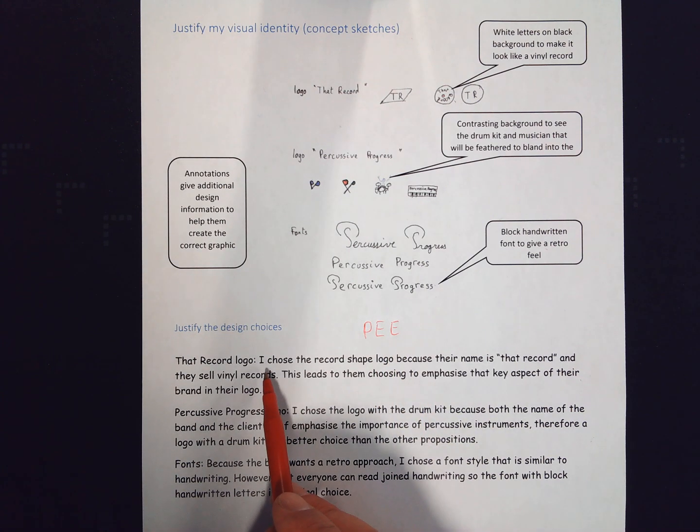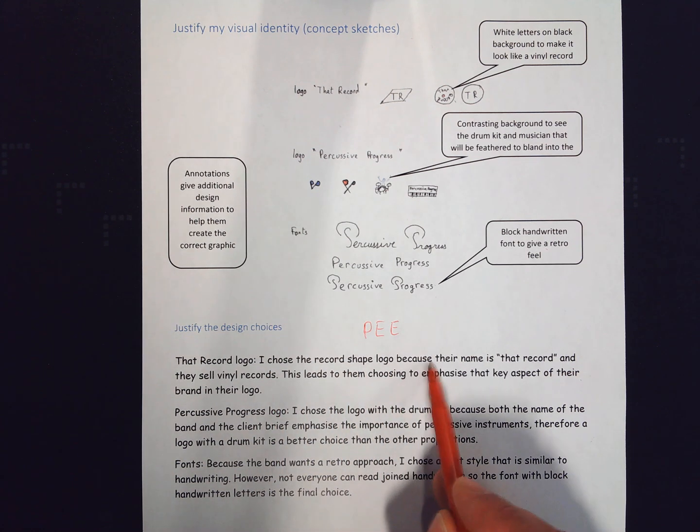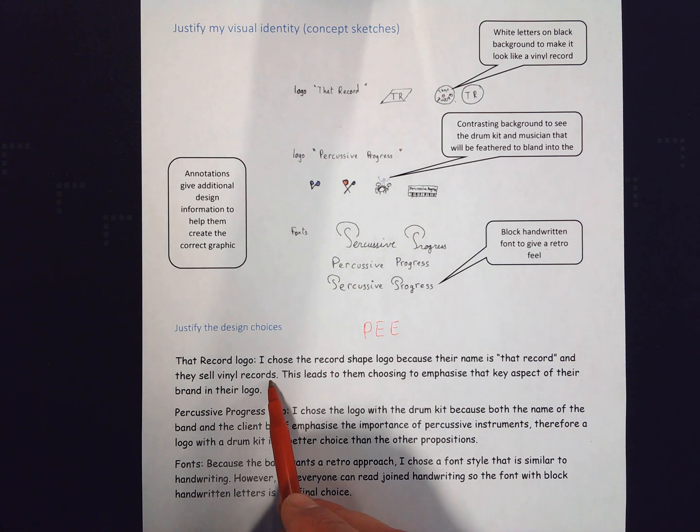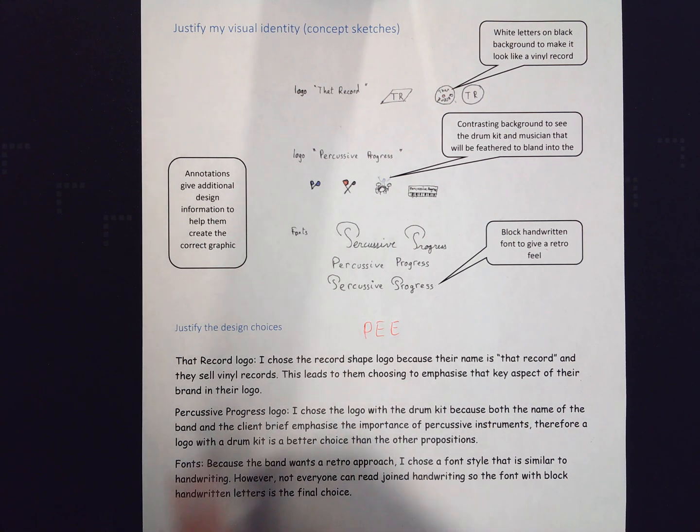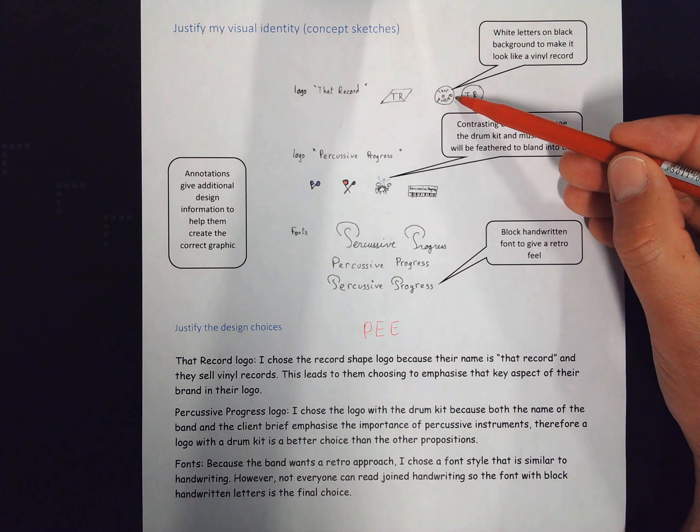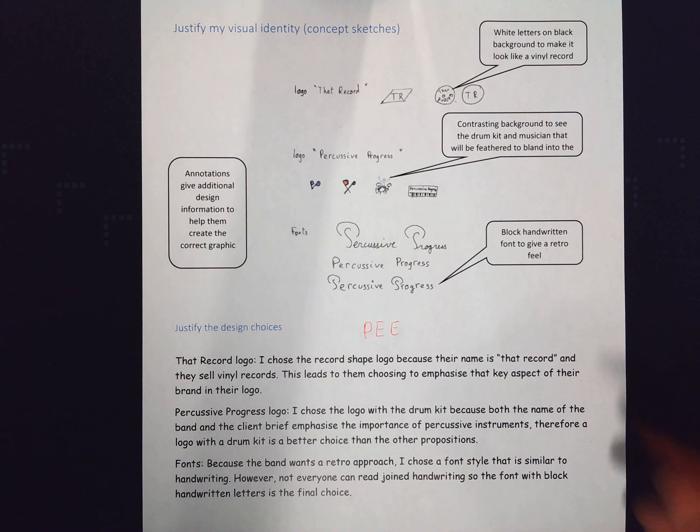For example here, my point is that I'm choosing the record shape logo, and then I'm linking it because That Record and they sell vinyl records. This leads them to choosing to emphasize that aspect of their identity in the logo. There's no right or wrong ideas here. What matters is can you link it back to the client brief? Can you link it back to some design conventions, for example? We'll talk about that a little bit later.